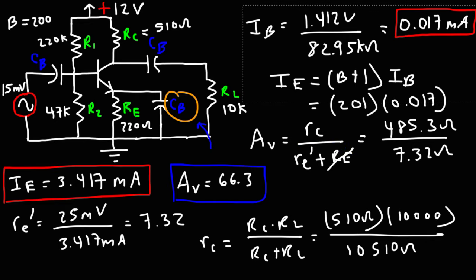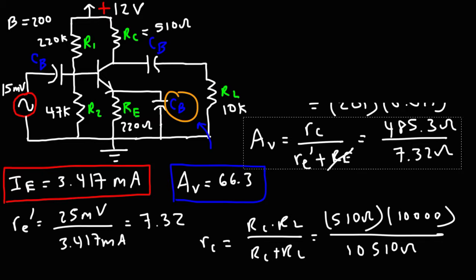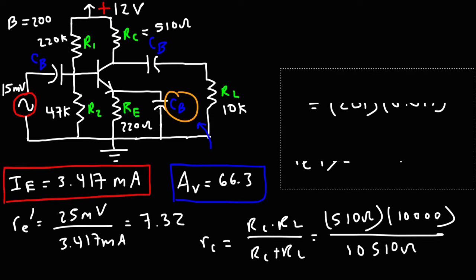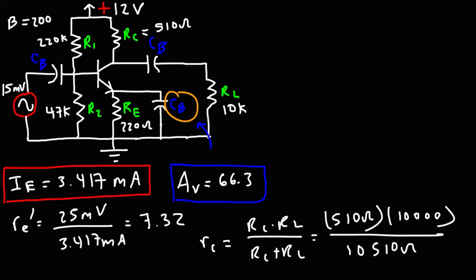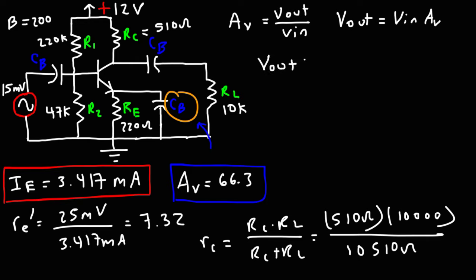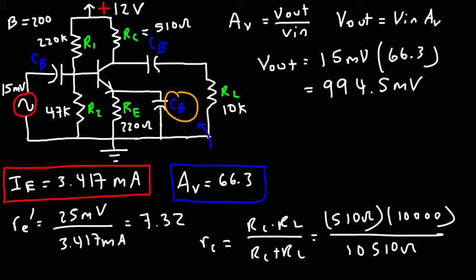Now let's calculate the output voltage of this circuit since we know the input voltage. The voltage gain is the ratio of output voltage to input voltage, so multiply the input voltage by the voltage gain. For this circuit, we have an input voltage of 15 millivolts multiplied by 66.3, giving an output voltage of approximately 994.5 millivolts, or approximately 1 volt.